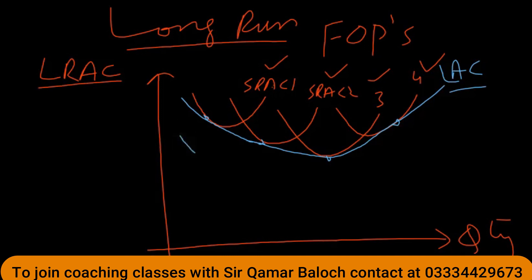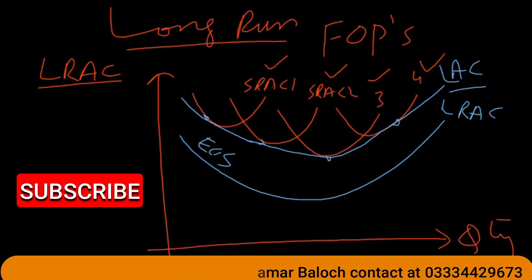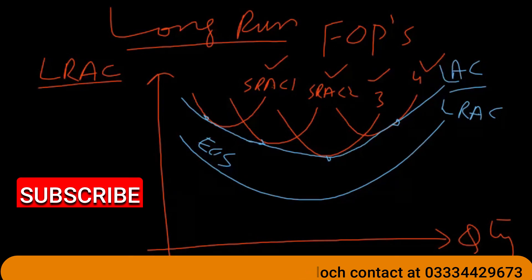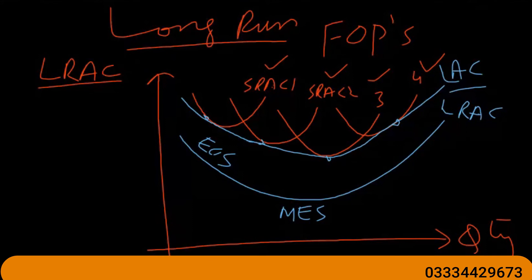The long-run average cost curve is slightly broader than the short-run average cost curves but is again U-shaped. The reasons for the U-shape in the long run include economies of scale, which cause average cost to fall initially, reaching a minimum at the minimum efficient scale, and then rising due to diseconomies of scale.